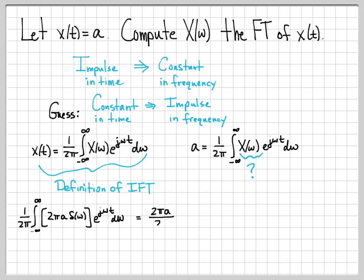Starting from this integral: 2 pi and a are constants, so we pull them out front, giving 2 pi a over 2 pi times the integral from minus infinity to infinity of delta of omega times e to the j omega t, d omega. This looks complicated, but we can use the sifting property again — integrating a function times an impulse over all omega just means evaluating the function at the location of the impulse. Here, delta of omega is located at omega equals 0, so we evaluate e to the j omega t at omega equals 0, giving e to the 0, which equals 1. The entire integral collapses to 1, leaving 2 pi a over 2 pi, which simplifies to a.